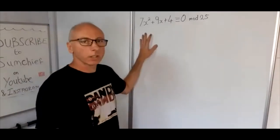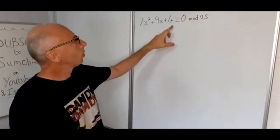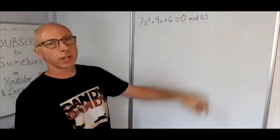We've got a quadratic congruence question here: 7x squared plus 9x plus 4 congruent with 0 mod 25.